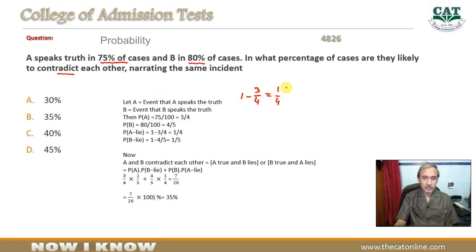Yaani ke 1 by 4 times woh jhoot bolta hai. Kyun ke 75% cases mein agar woh sach bolta hai toh 25% cases mein woh jhoot bolta hai. Toh is liye humne 1 mein se minus kiya is ki probability ko. Probability of A lie is equal to 1 minus 3 by 4 is equal to 1 by 4.